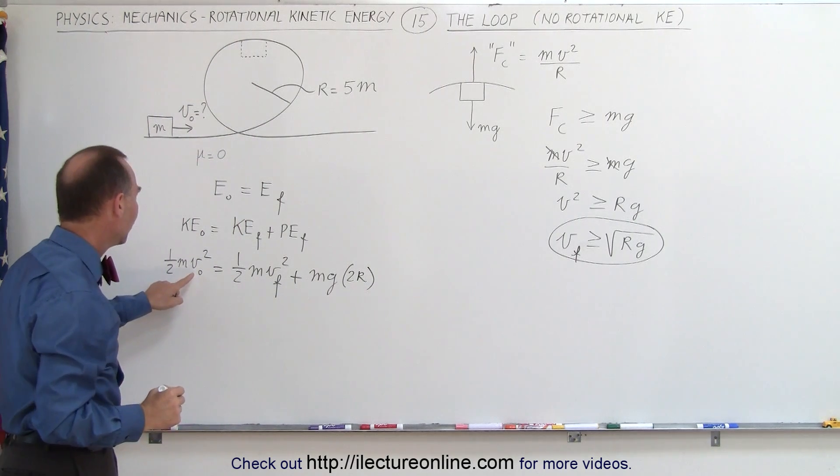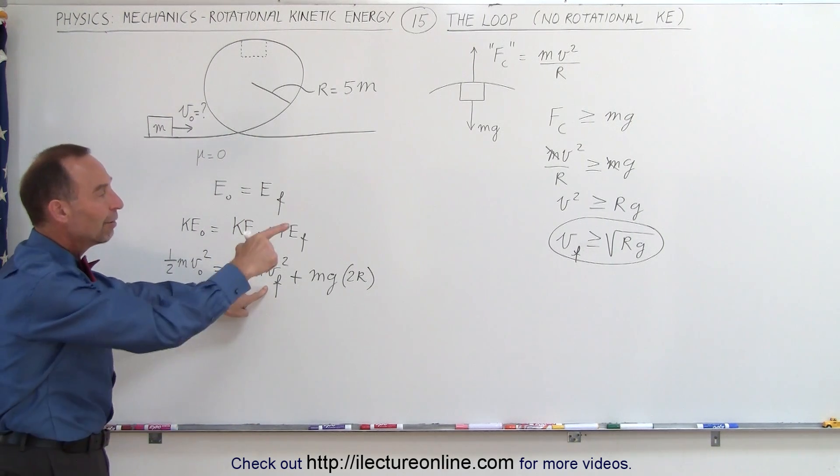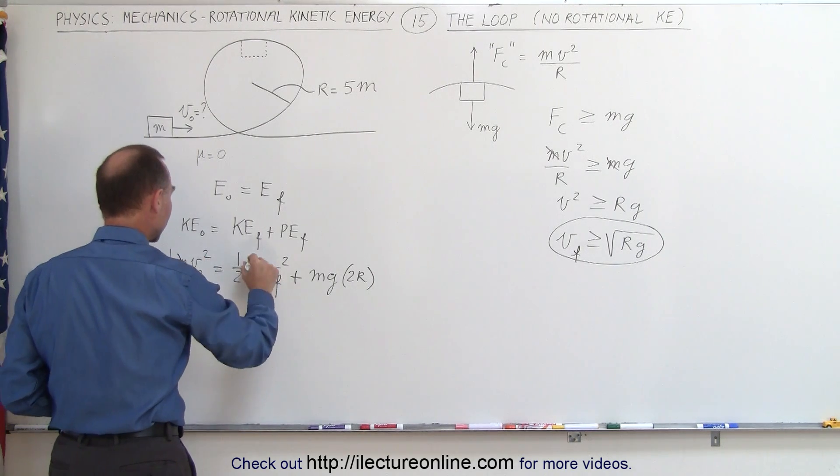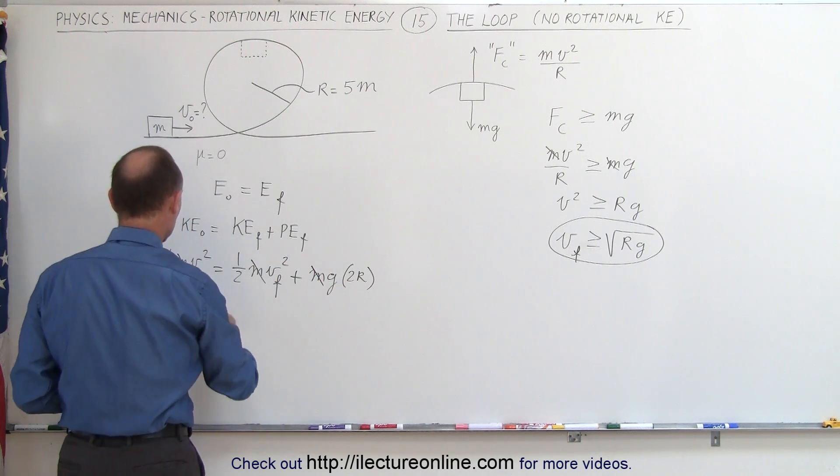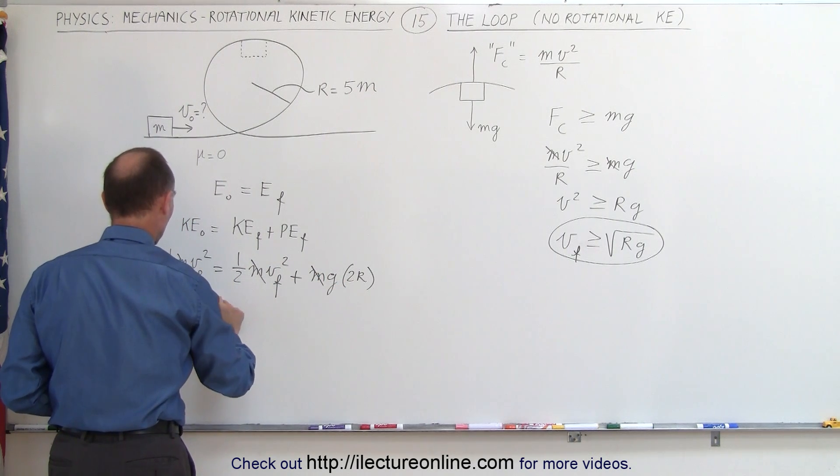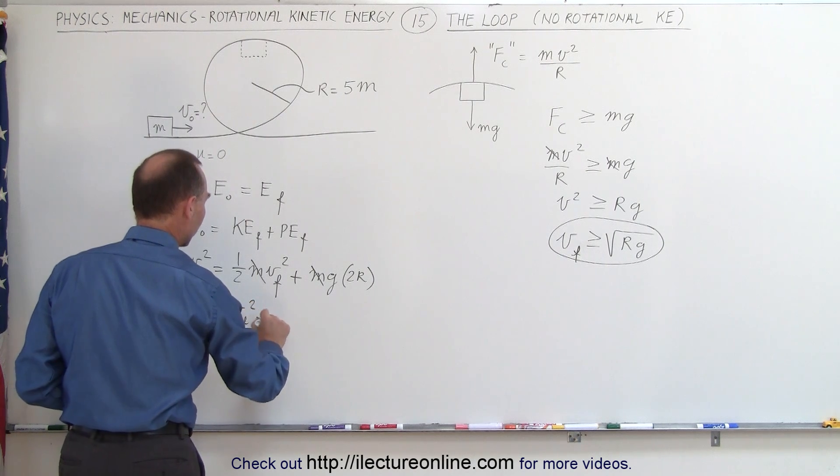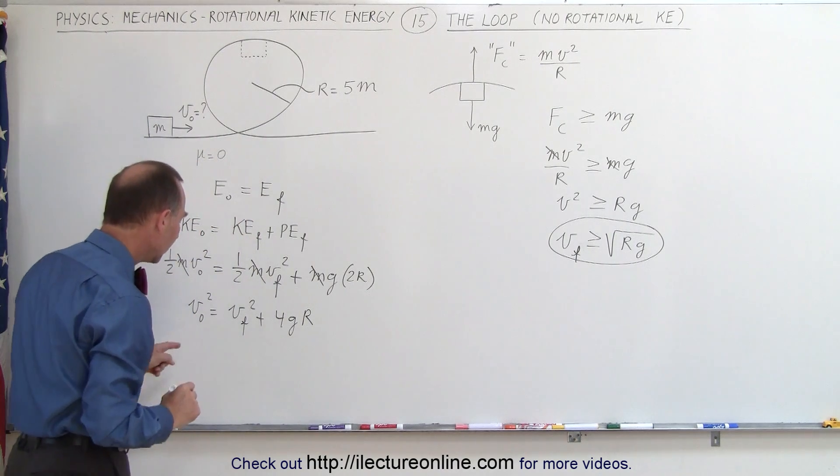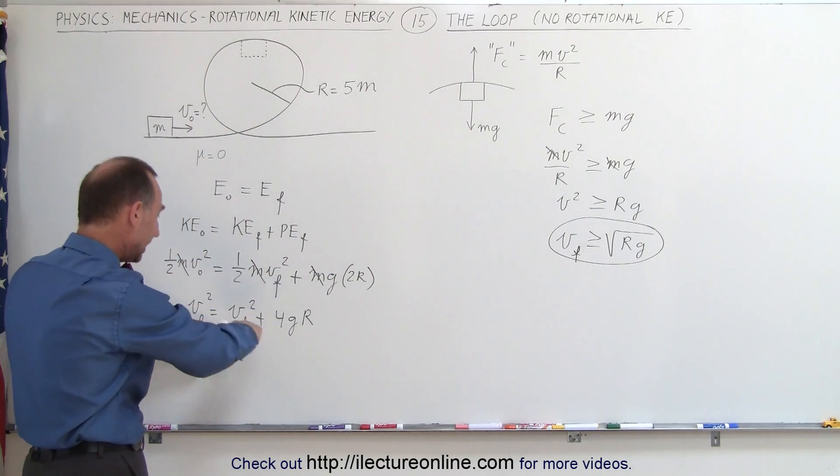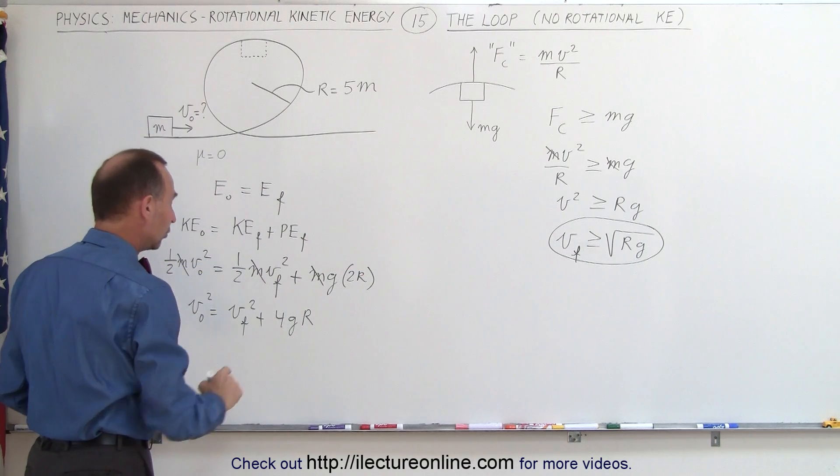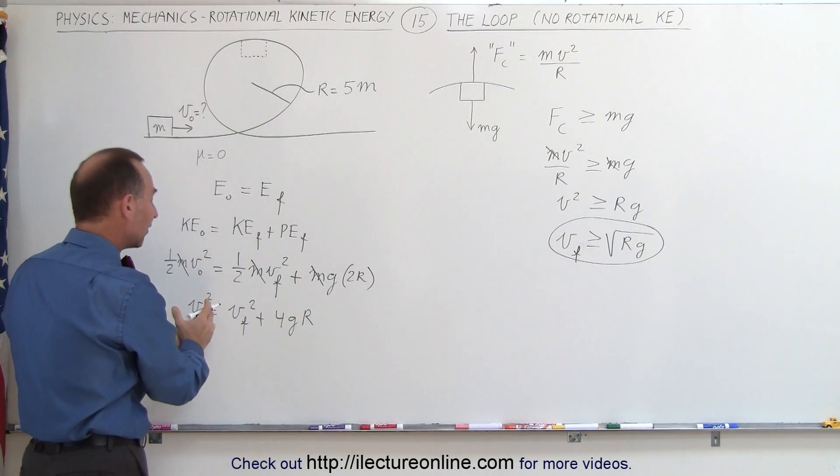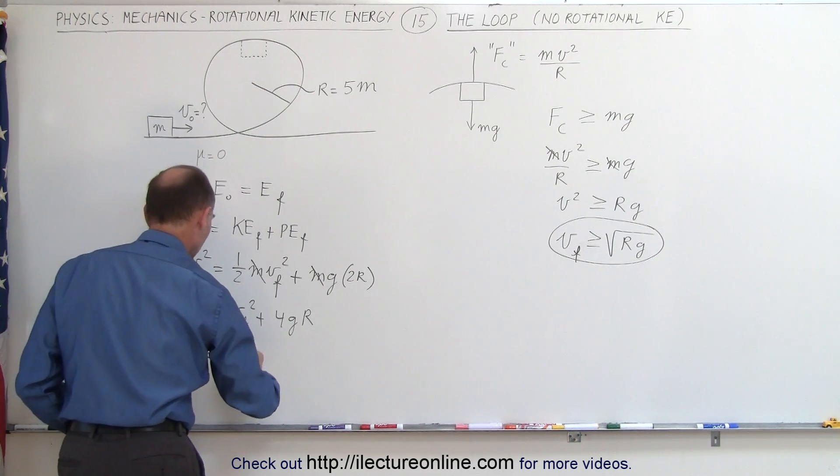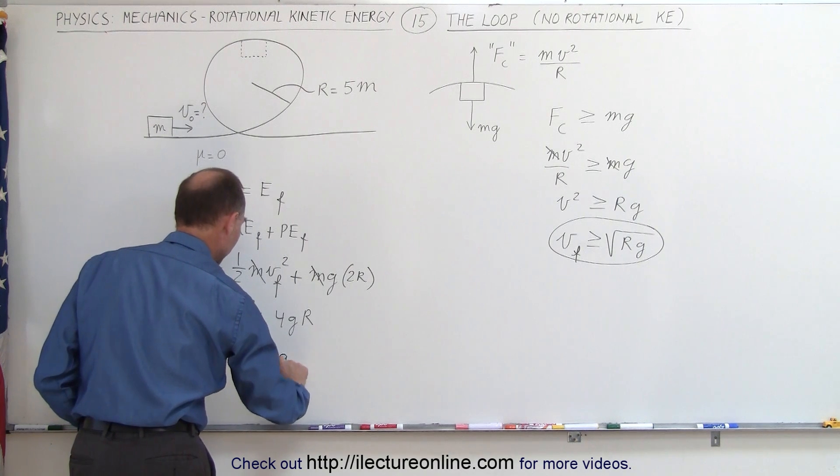And now we're looking for v initial in terms of the minimum v final requirement. That means first of all we can cancel out all the m's and we can multiply both sides by 2, which gives us v initial squared equals v final squared plus 4gr. Finally we're going to substitute into vf what vf is equal to. Since vf squared is equal to rg, v initial squared is equal to rg plus 4gr.